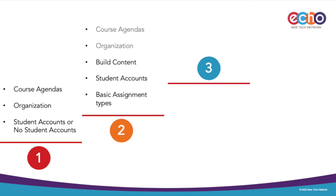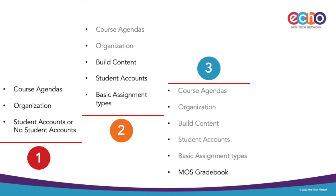The third step, in addition to all previously stated, would be to add the use of the multi-outcome scoring gradebook to assess how students are doing in relation to standards, content areas, and the new tech learning outcomes.